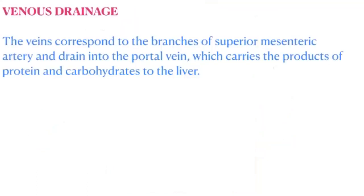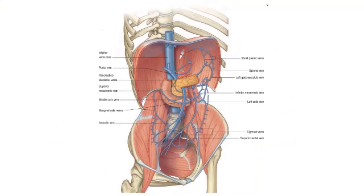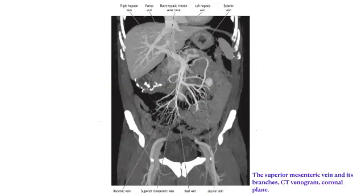The veins correspond to the branches of the superior mesenteric artery and drain into the portal vein, carrying the products of protein and carbohydrate digestion to the liver. The superior mesenteric vein leads to the portal vein. On imaging, the superior mesenteric vein, jejunal vein, and ileal vein can be identified.